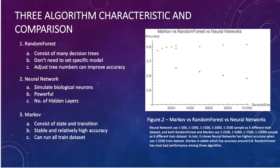The third: Markov. Markov consists of states and transitions. Markov is stable and has relatively high accuracy for this data. And the most important reason for me to choose Markov is that Markov can run on the full training data set. And in this graph, we can see when the sample size is 1 to 2,500, the neural network has the highest accuracy, then Markov, and random forest has the lowest accuracy.